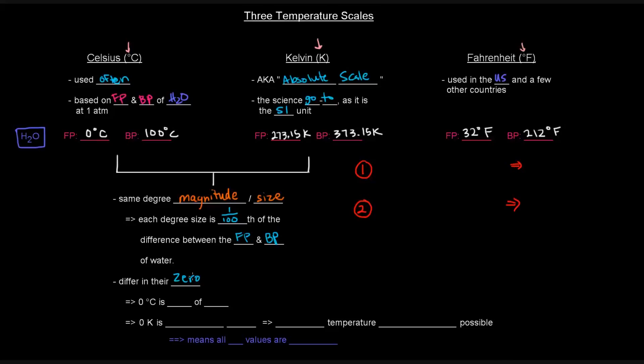But they differ in their zero. What's zero mean in each case? Zero degrees Celsius is defined as the freezing point of water. Zero Kelvin, however, is not the same thing. Zero Kelvin is absolute zero. And what that is, that is the lowest temperature that is theoretically possible. Because this means that zero Kelvin is the lowest possible temperature, that means that all Kelvin values are positive. Of course, zero is just zero, but that means you can't have negative Kelvin degrees. You can have negative degrees Celsius.